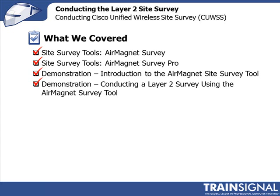We looked at using the AirMagnet Survey tool — there are other tools out there. The big advantage of this tool is you can take the results of that site survey and pull them into your Cisco network management tool called the Wireless Control System. You can then use that information going forward for deployment, installation, and keeping your data up to date and accurate as to where your access points are and what antennas you've used.